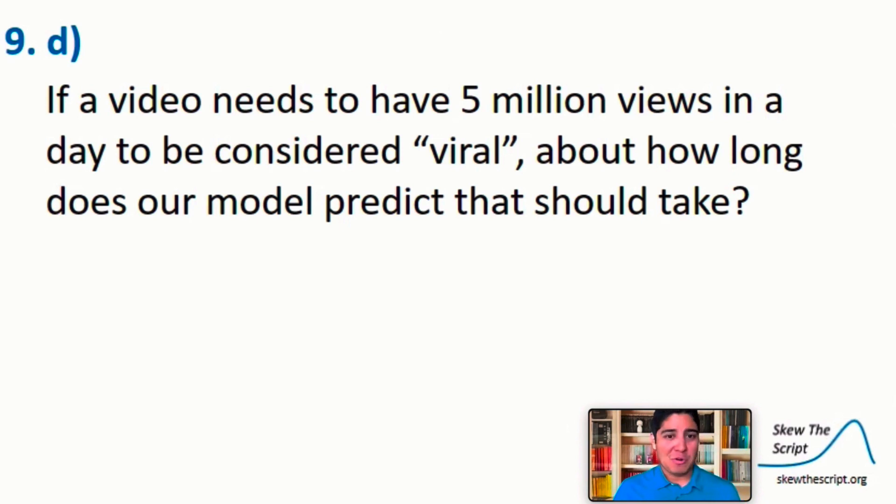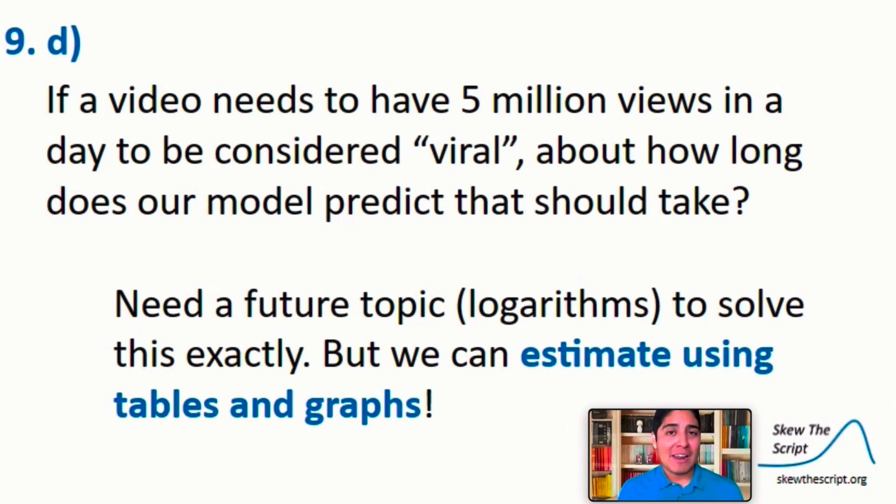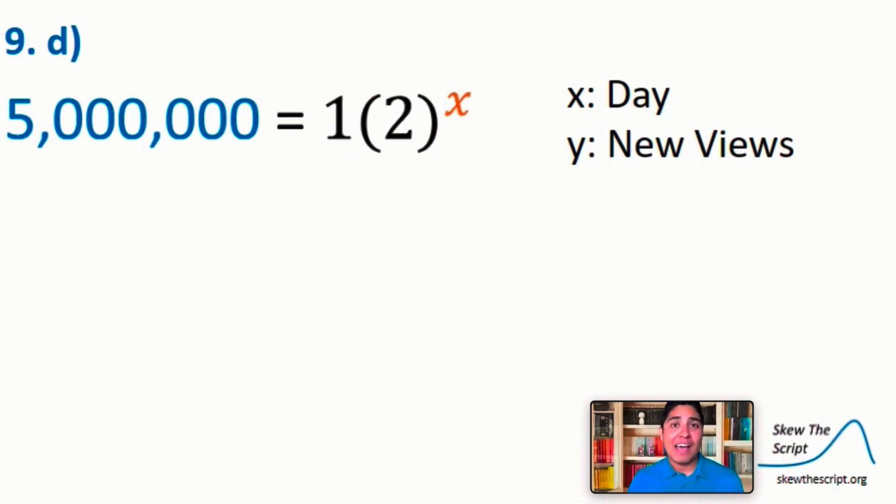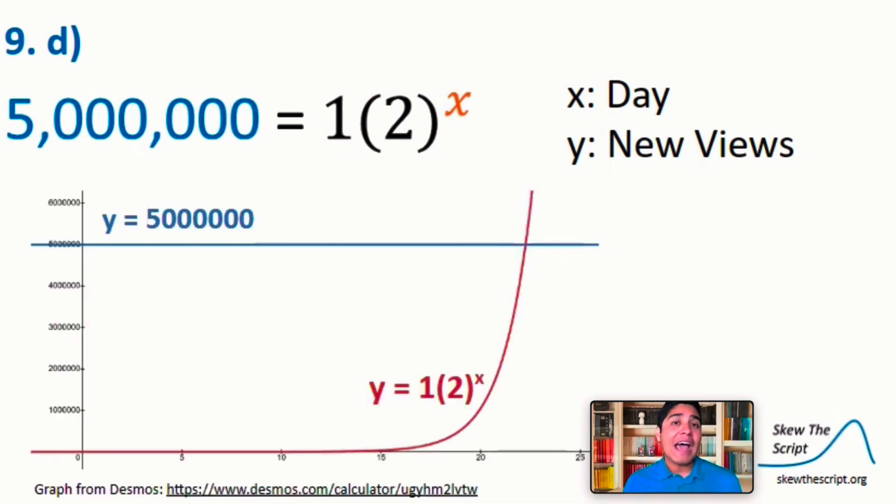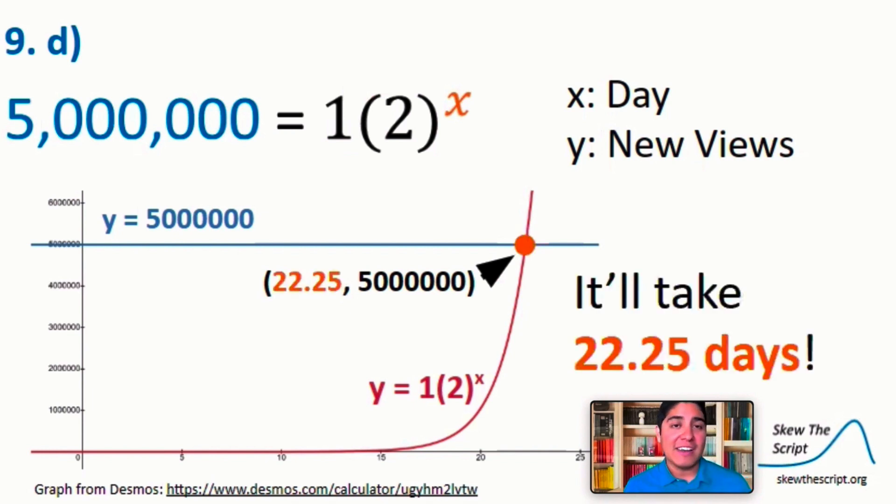Now let's think about a slightly different question. If a video needs to have 5 million views in a day to be considered viral, about how long does our model predict that should take? We actually don't have the mathematical tools to solve that yet, and you'll see why in a second, but we can use a graphing calculator or Desmos to answer this question. And in this problem, we want our y variable to be 5 million. This is where we need a future math concept to find x. Currently, we don't have anything to help us get the variable out of the exponent, but have no fear, we'll get there soon. Since we want the output to be 5 million, we'll set this to the term y in our model and set the two to be equivalent. We then identify the intersection to be about 22.25 and 5 million, which means that in about 22.25 days, we should predict about 5 million views.